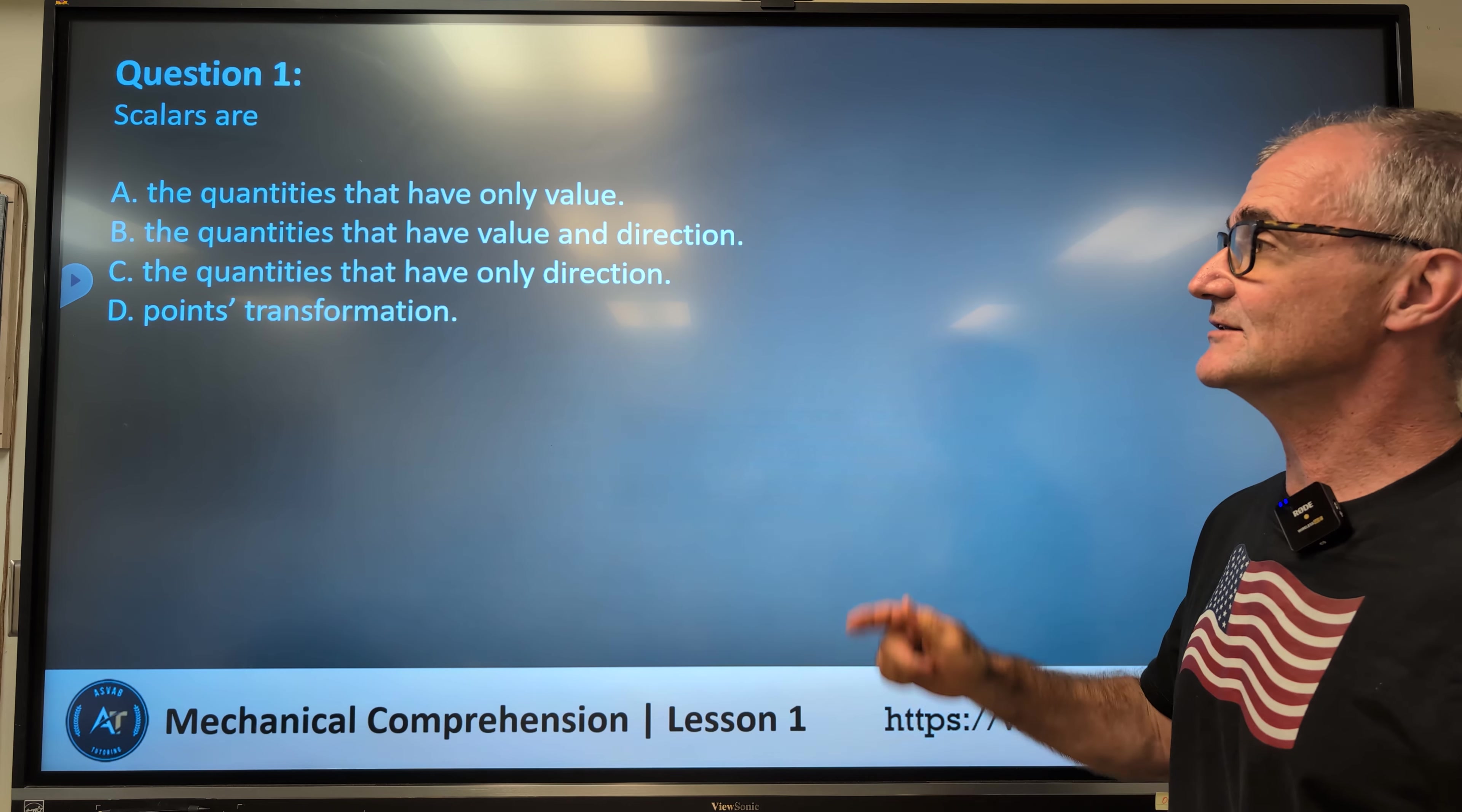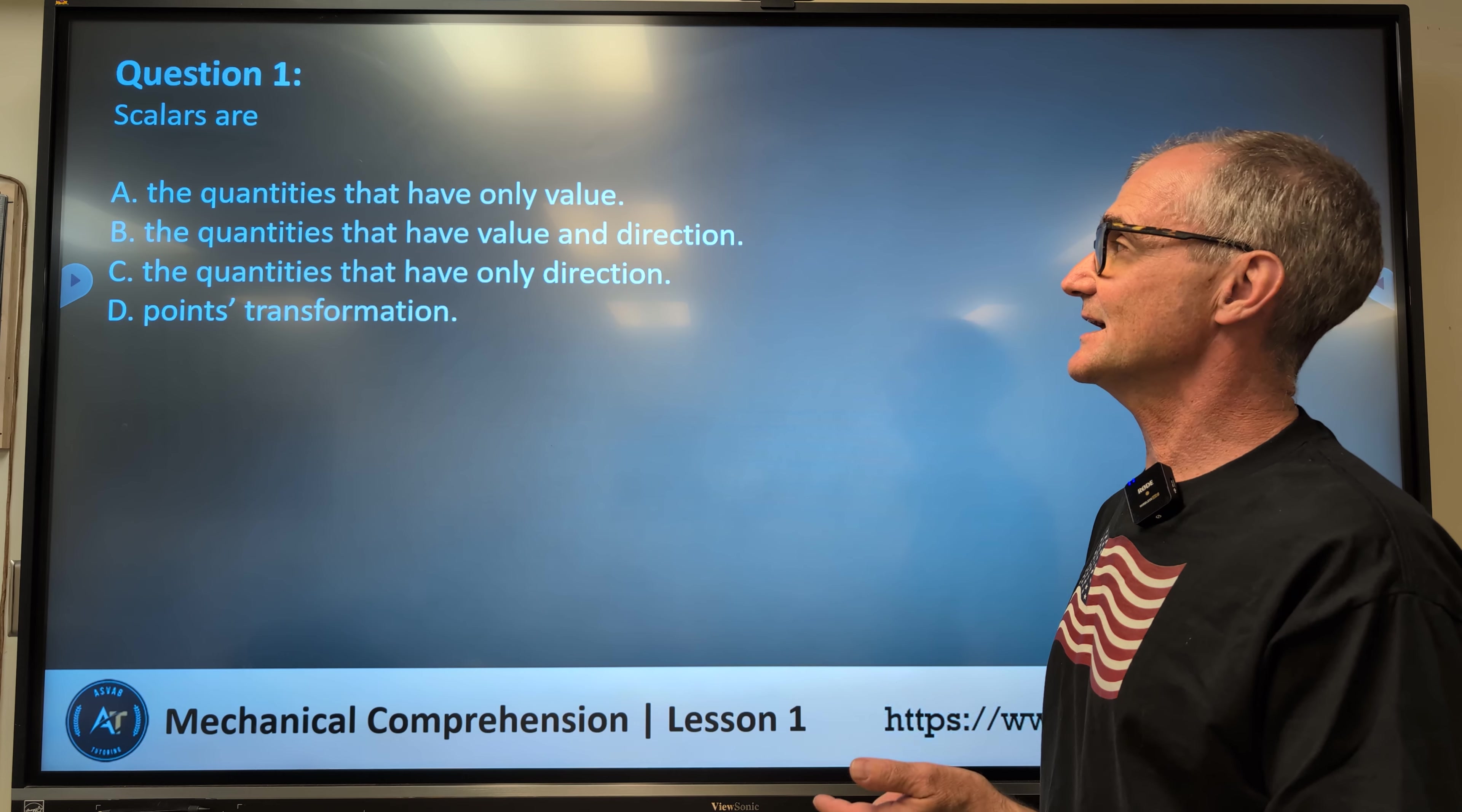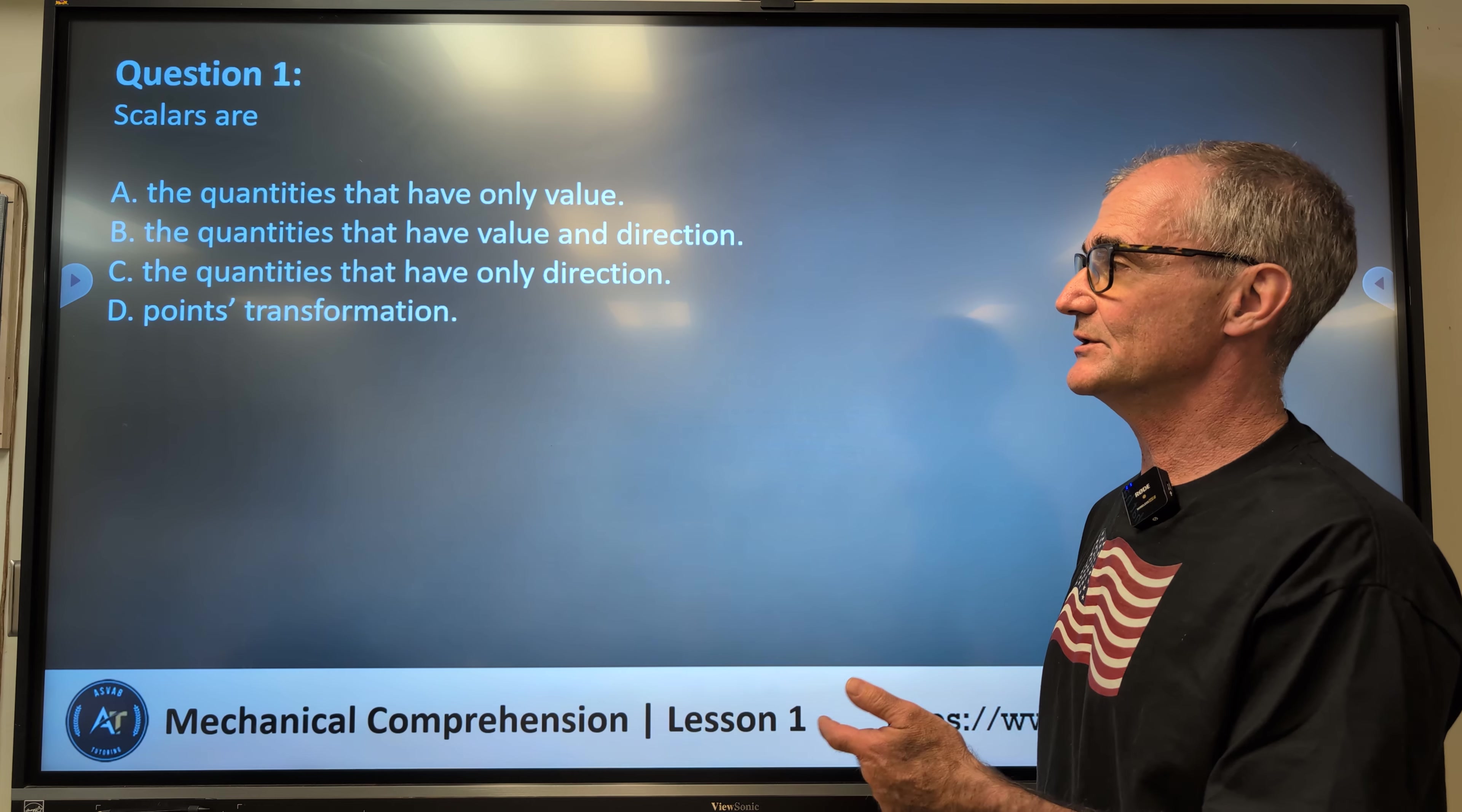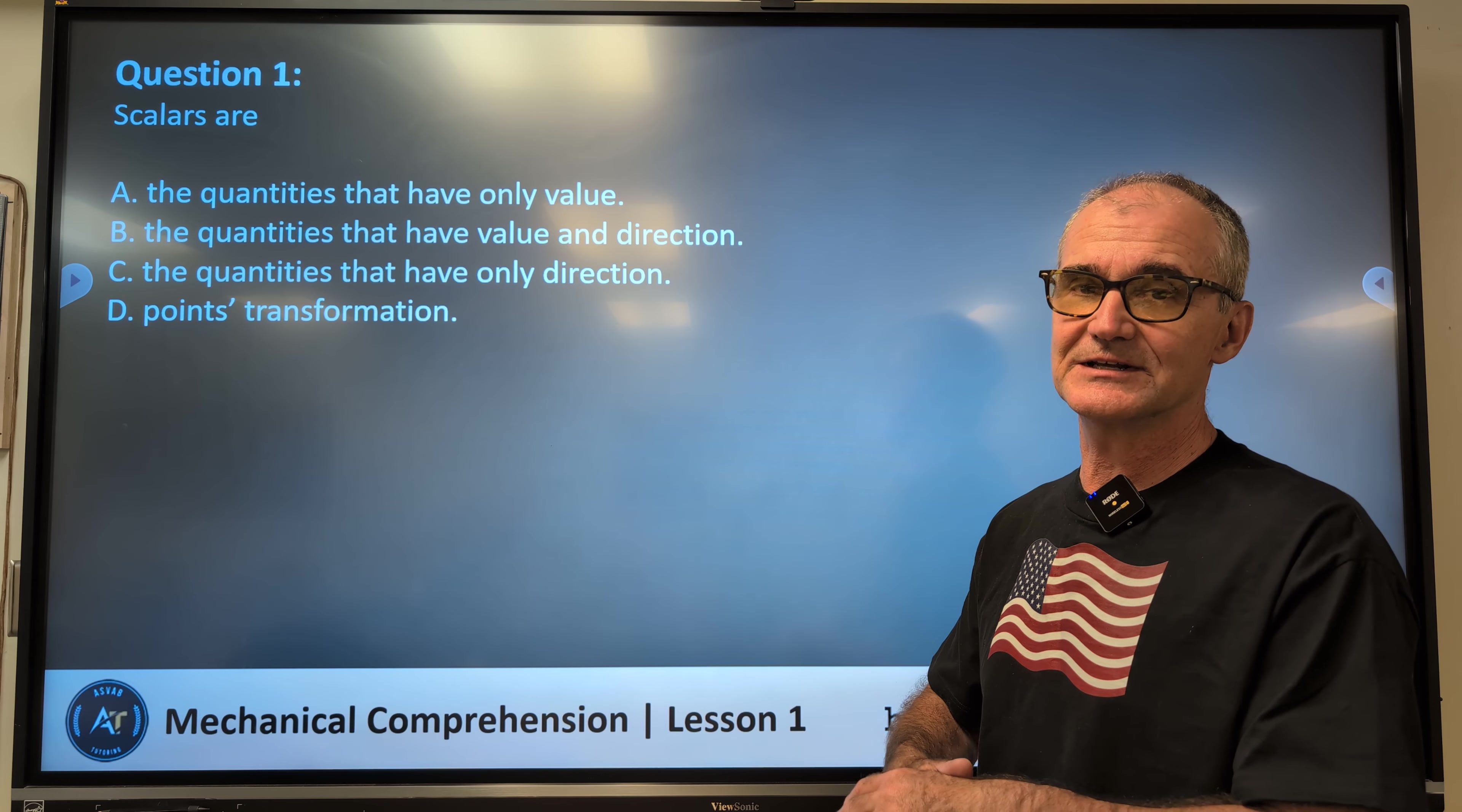All right, number one. Scalars are: A, the quantities that have only value, B, the quantities that have value and direction, C, the quantities that have only direction, or D, points transformation. So what scalars are, pause the video, do the best you can, unpause the video.